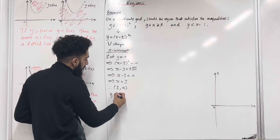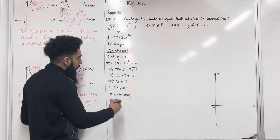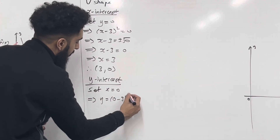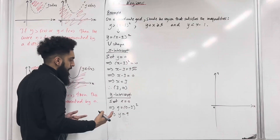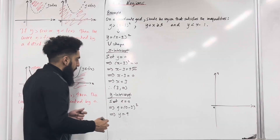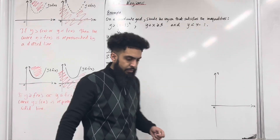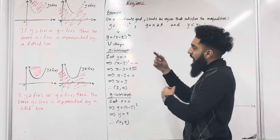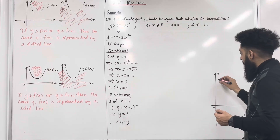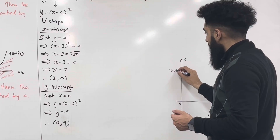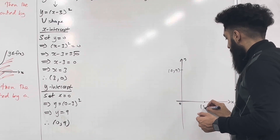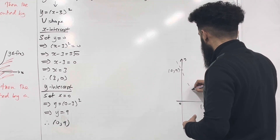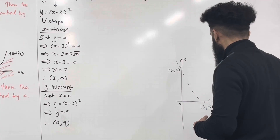Now I want to find the y-intercept. To find the y-intercept, I need to set x equal to 0. This implies that y is equal to 0 minus 3 squared, which implies that y is equal to 9. So the y-intercept will be 0, 9. Now, over here I've got a greater than, so the curve y equal to x minus 3 squared will be represented by a dotted line. My y-intercept is 0, 9 and my x-intercept is 3, 0 — so we've got a U-shape represented by a dotted line.